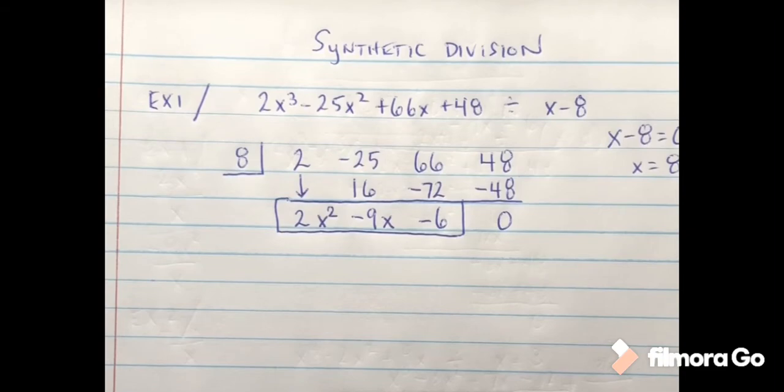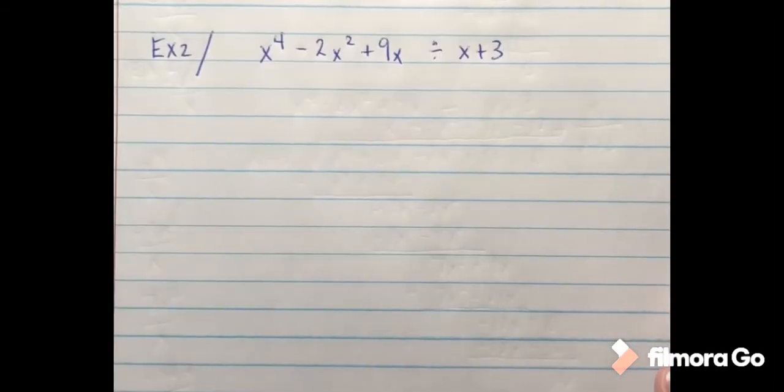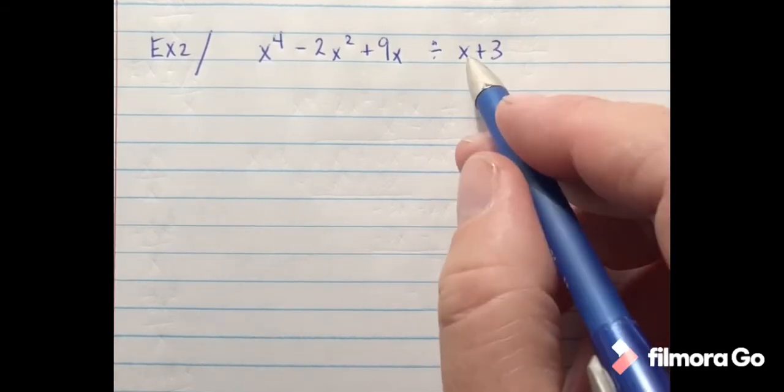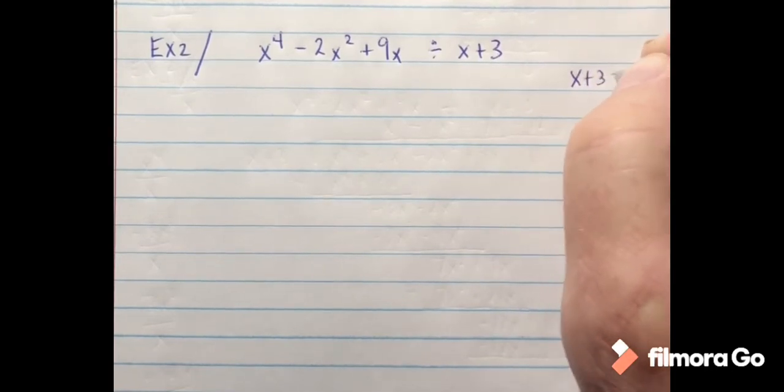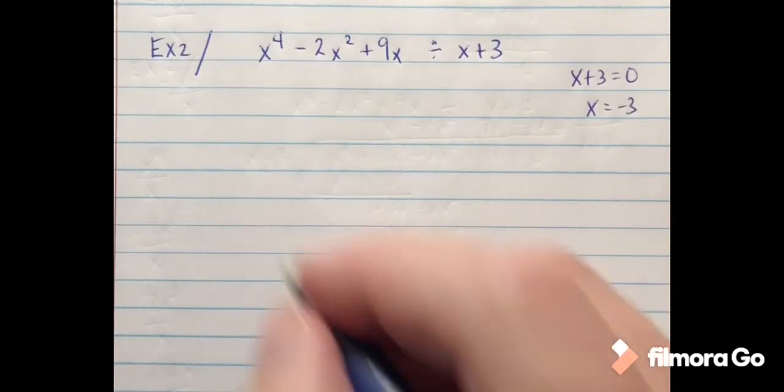Okay, let's look at example number two with our synthetic division. On this one, again same process to start. I'm going to say x plus 3 equals 0, and I subtract 3. That tells me x equals negative 3.